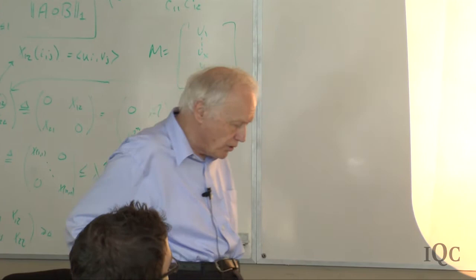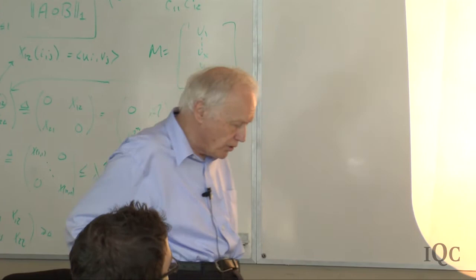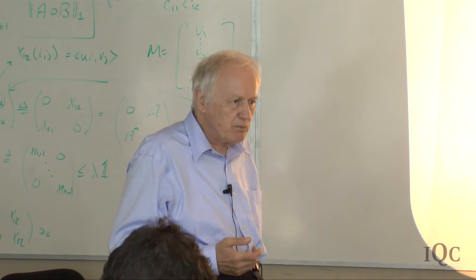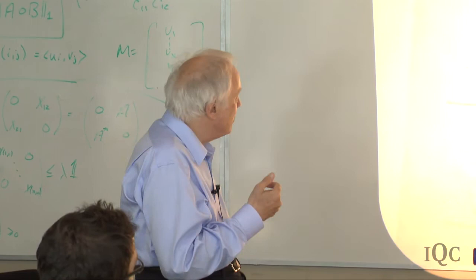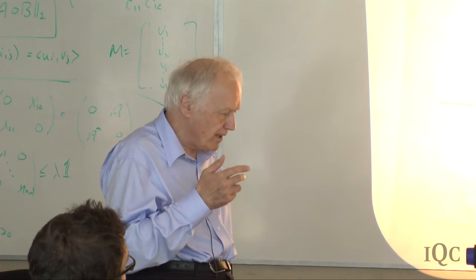And yet, at the macroscopic level, it seems that things happen or don't happen. In fact, it seems we don't even have the mental framework to describe things in any other way. So the question is: how do you achieve the result that a definite outcome is realized at the macroscopic level?